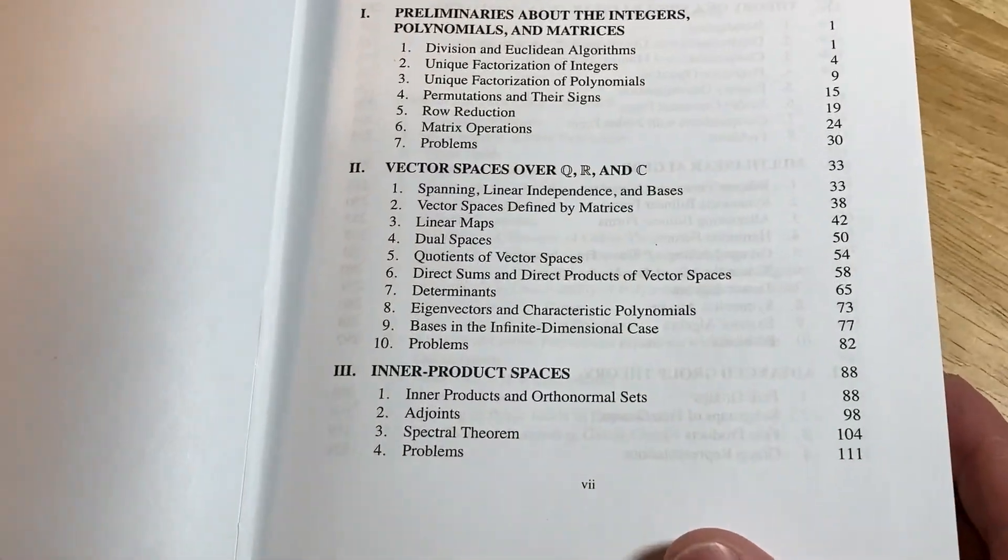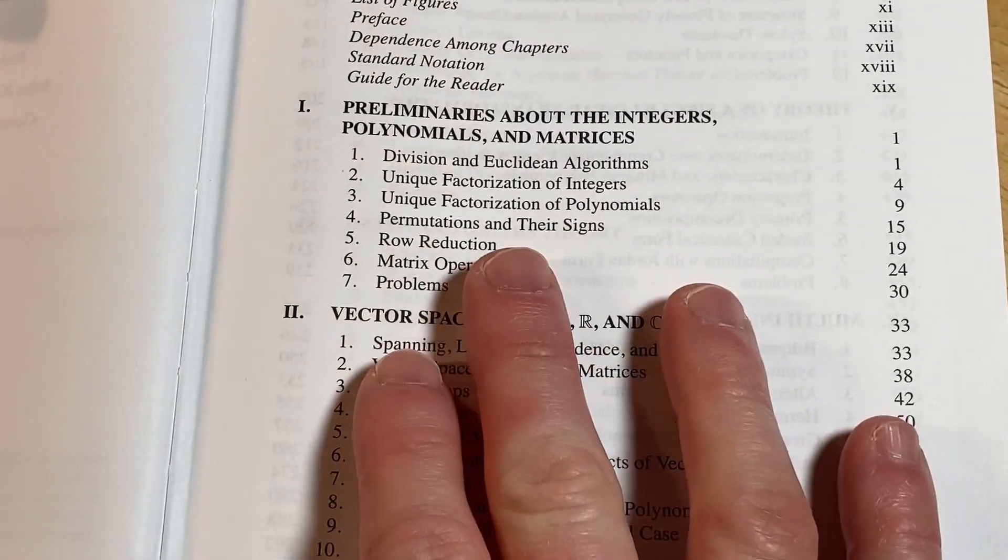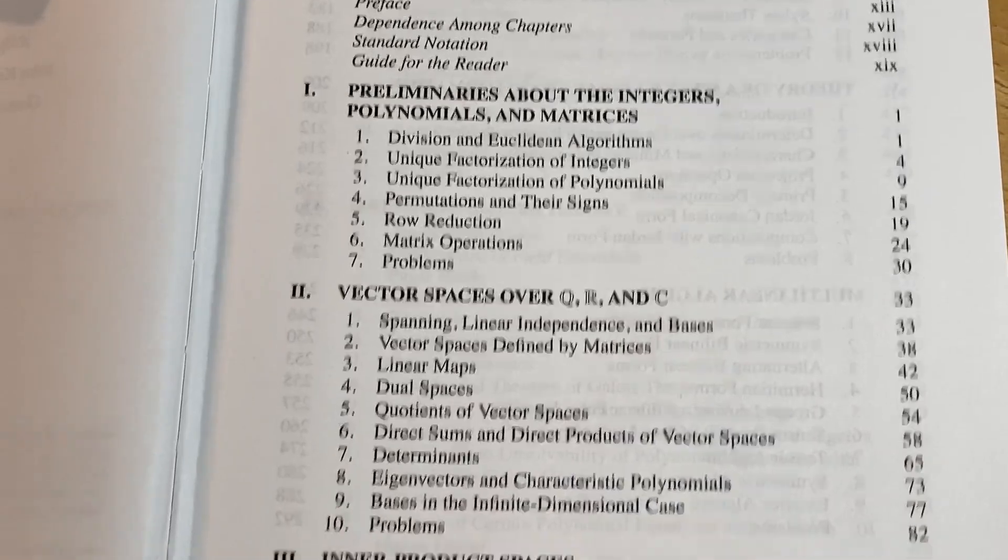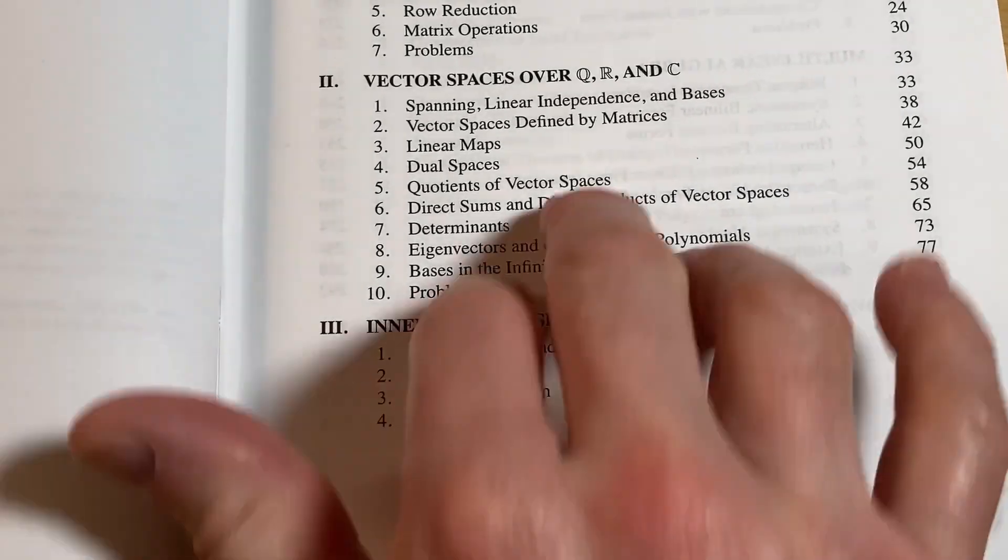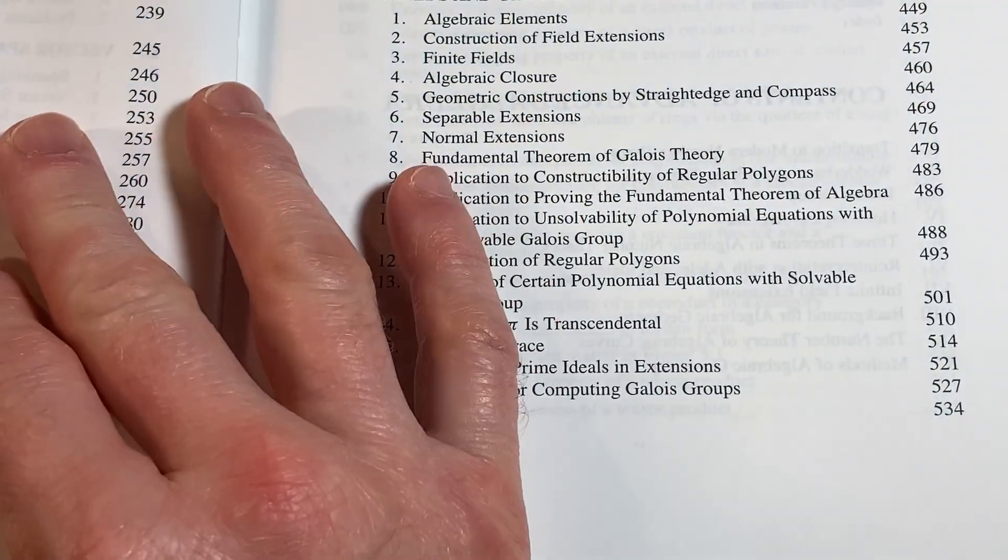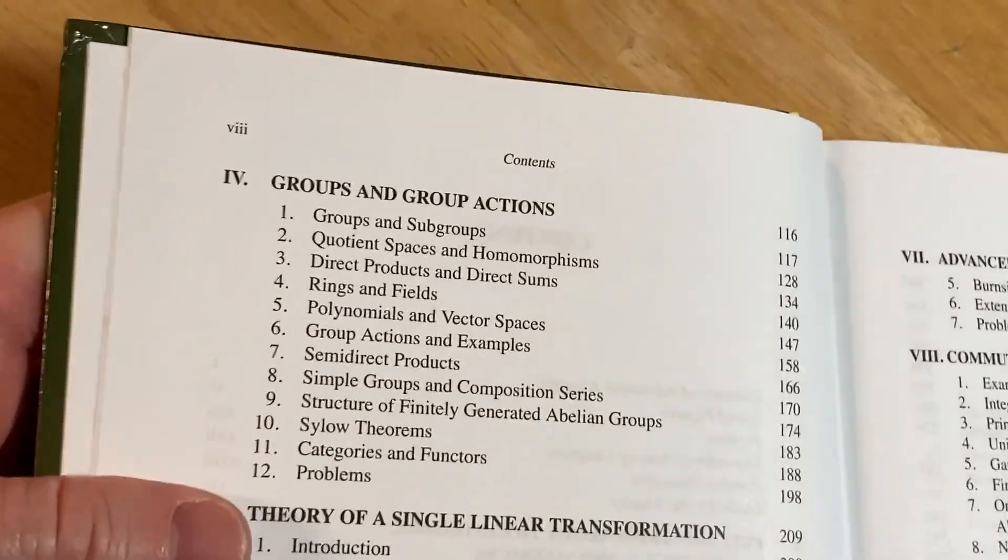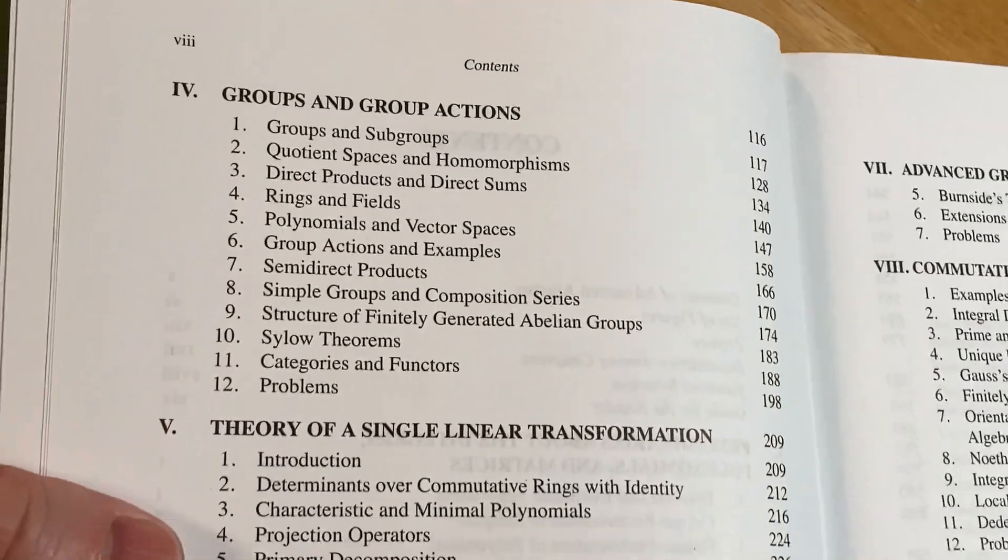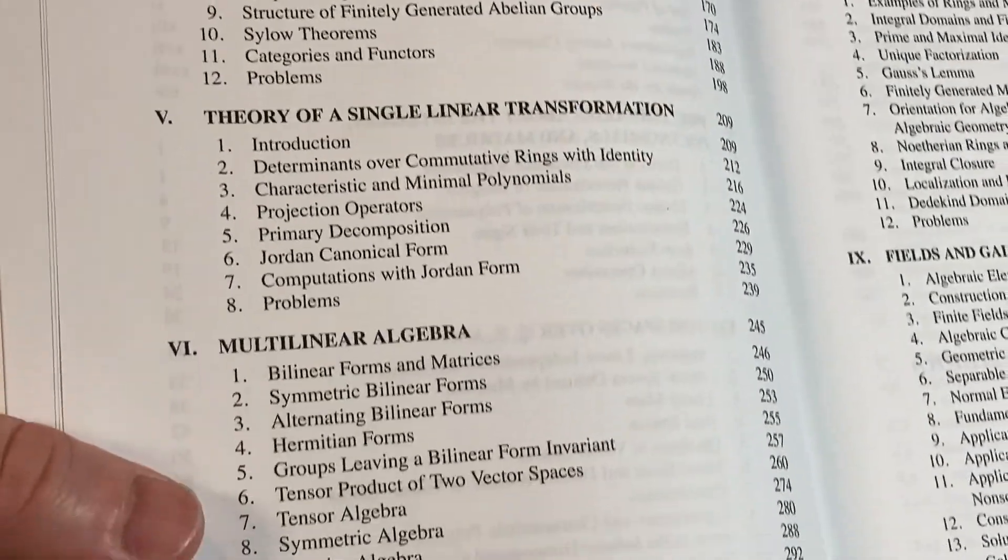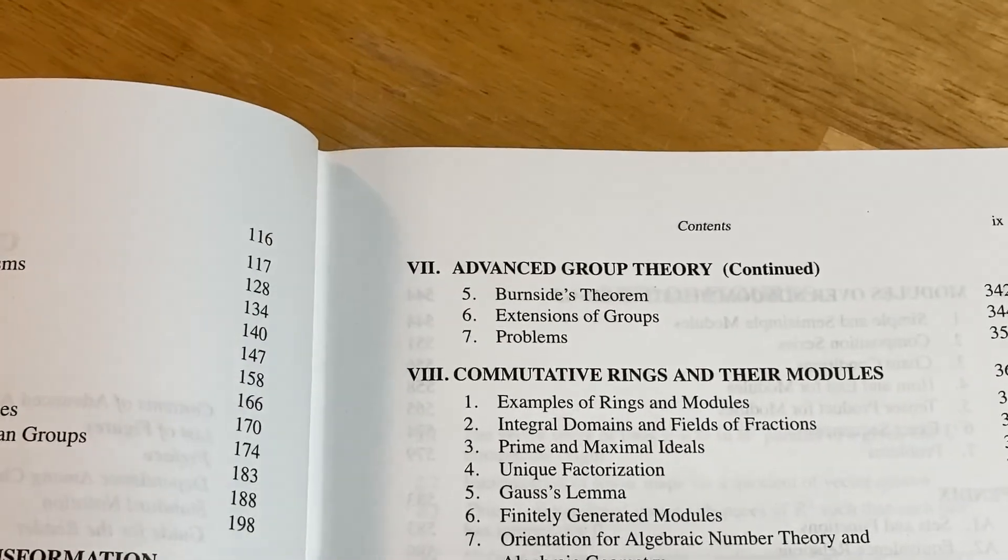Let me zoom in here so you can see a little bit easier. It starts with integers, polynomials, and matrices, and then vector spaces over Q, R, and C, and then inner product spaces. So kind of an interesting approach, doing some linear algebra first. And then he goes into groups and group actions, and then the theory of a single linear transformation, and multilinear algebra, and then advanced group theory.